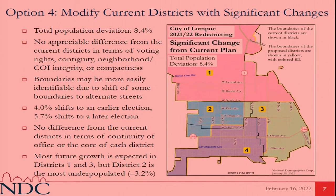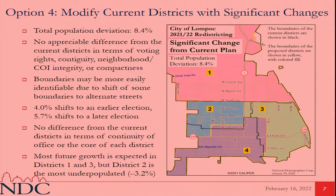Option four is to have a more significant change. This would raise the population deviation to 8.4 percent, which is still under the 10 percent threshold of constitutional equal population. The idea was to shift the boundaries between districts two and four to follow a more major street. However, there would be higher percentages shifting to different elections under this plan, and district two would be the most underpopulated district — ideally you would want districts one and three to be the most underpopulated.